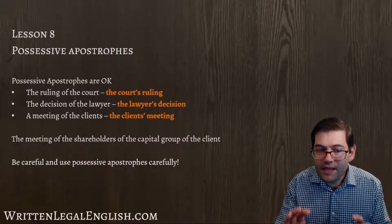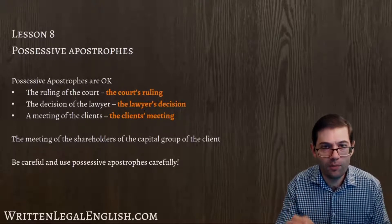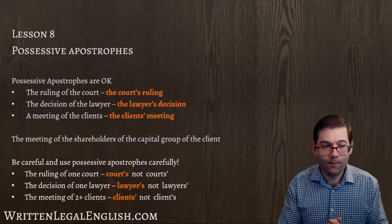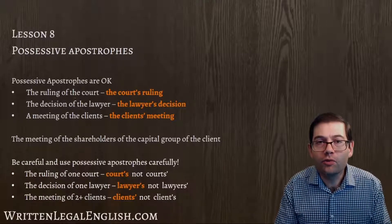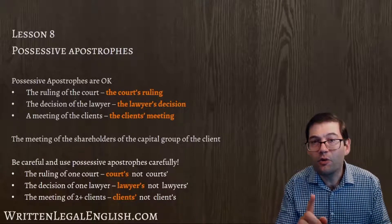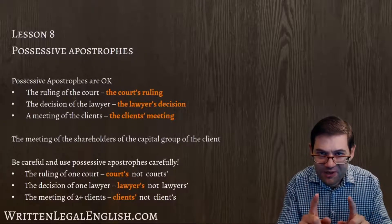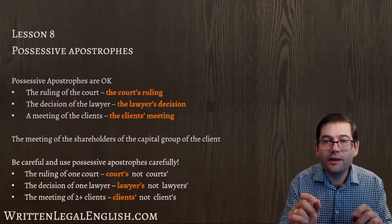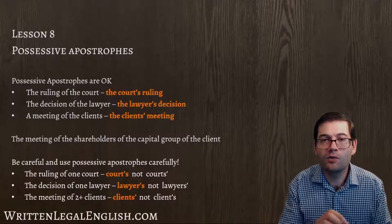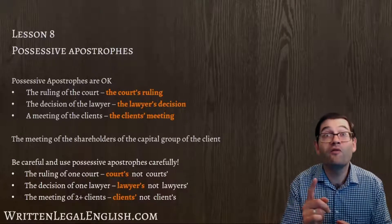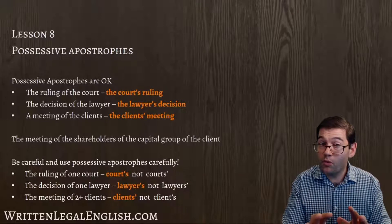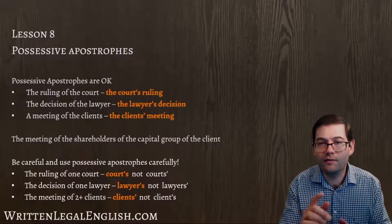We have to be careful to use possessive apostrophes carefully. The ruling of one court is 'court's', not 'courts'. Now look at the screen behind me and have a look at the position of the possessive apostrophe. If I am talking about one court, it goes before the s. If I'm talking about more than one court, it goes after the s.